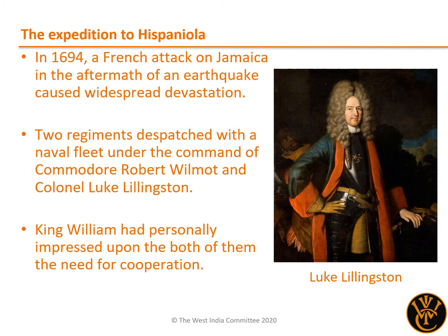In 1694, a French attack on Jamaica in the aftermath of an earthquake caused widespread devastation. This led two regiments under the overall command of Colonel Luke Lillingston being dispatched to the region from England, a total of around 1,200 men, with the principal aim of recovering Jamaica if it had been captured, which it had not, and then attacking the French territory on Hispaniola. However, the fleet, under the overall command of Commodore Robert Wilmot of the Navy, did not arrive at the Allied territory of Spanish Hispaniola until the following year due to delays in communications and launching the expedition. Relations between navy and army were already at a low point by the time they arrived, despite the King personally impressing the importance of cooperation between Wilmot and Lillingston, in light of how poor relations between commanders of land and sea had negatively affected the previous expeditions, leading to both mistakes and delays.